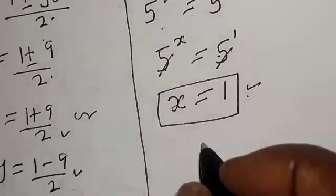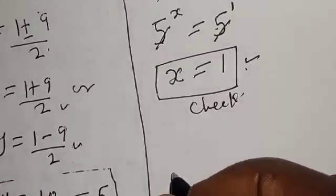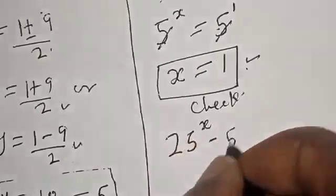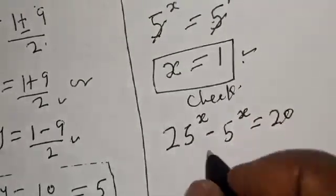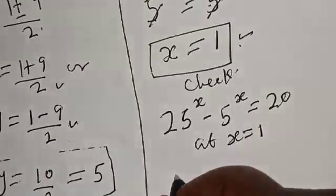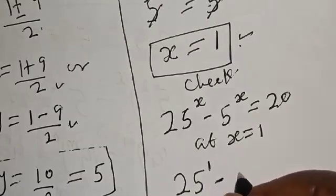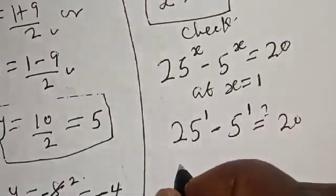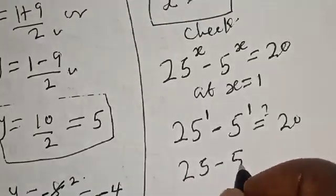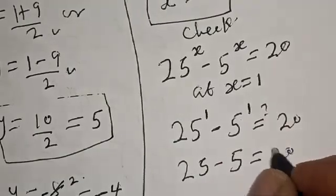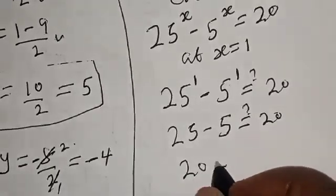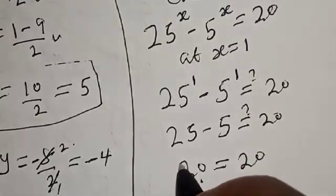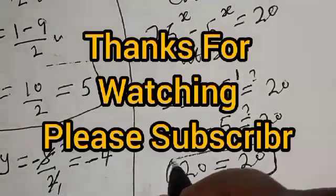Check: substituting s equals 1 into the original equation, 25 raised to power 1 minus 5 raised to power 1 must equal 20. We get 25 minus 5, which equals 20. This satisfies the given equation at s equals 1. If you have enjoyed the class, please don't forget to like, share, comment, and subscribe. Thank you.